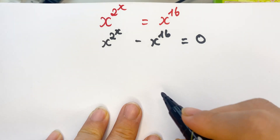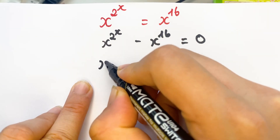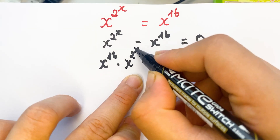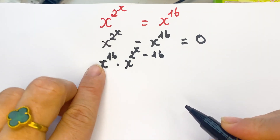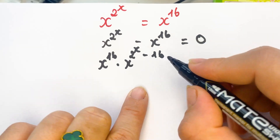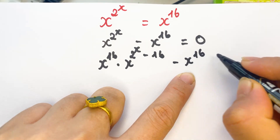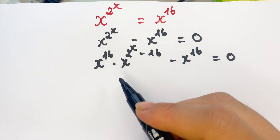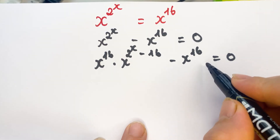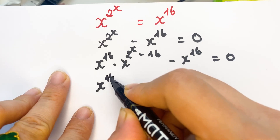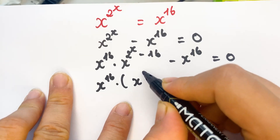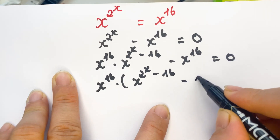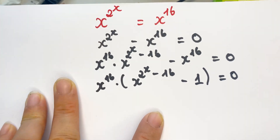Then we need to take x^16 times x^(2^x - 16). You need to find a common factor, so we factor out x^16. In brackets, we can write x^(2^x - 16) minus 1 equals 0.